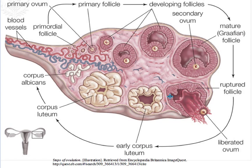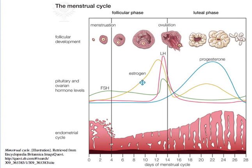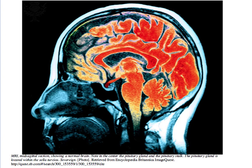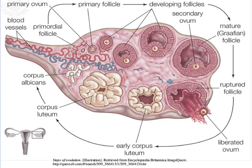As the follicle continues to mature, it moves toward the edge of the ovary, creating a bulge, and with this comes ever increasing levels of estrogen. Once estrogen reaches another critical concentration — now high enough — it sends another signal via the bloodstream to the anterior pituitary gland. This time the increased concentration triggers a positive feedback response, and high levels of FSH and LH are sent into the bloodstream.